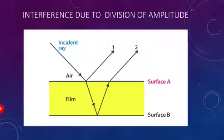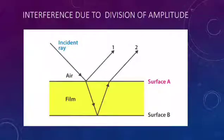The second method is interference due to division of amplitude. In this method, the amplitude is split into reflected components and transmitted components.